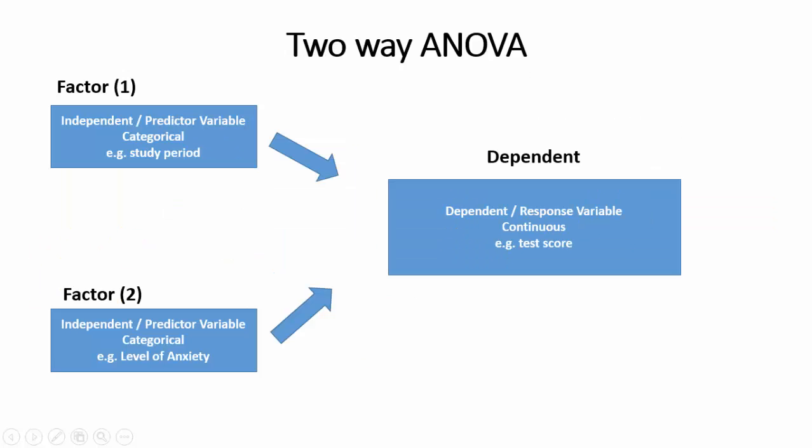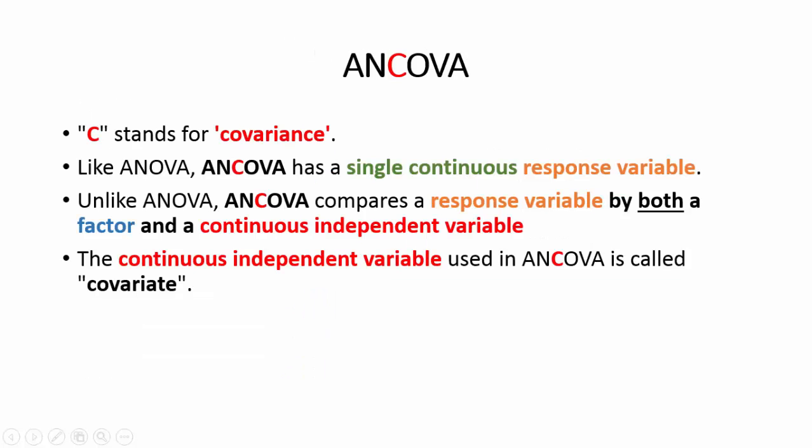In two-way ANOVA, there are two independent factors with a single continuous response variable. Let's move now to ANCOVA. Here, the C stands for covariance. Like ANOVA, ANCOVA has a single continuous response variable.